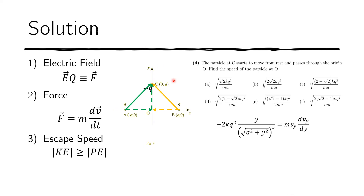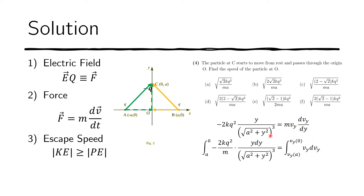Now let's do the integration. We integrate the left side with respect to v_y and the right side with respect to y. Moving m to the right side, the constant can be taken out of the integral. The limits on the left run from v_y(A) to v_y(0), and on the right from y = a to y = 0, since we are integrating from the starting point at A down to the origin.